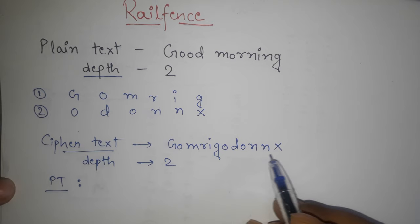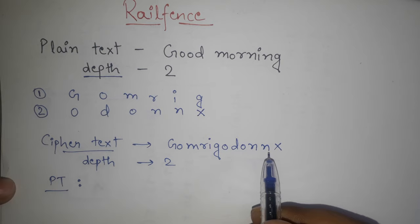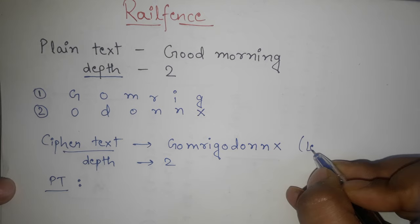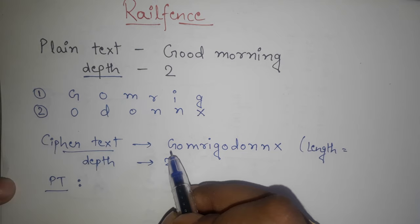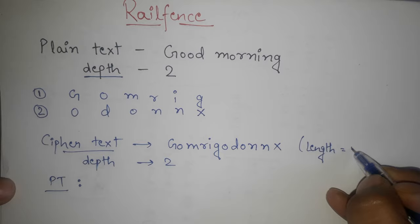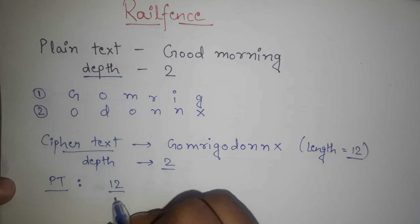For ciphertext, the depth I want to divide. We divide the length by the depth. How much length is? It means total of the characters. 1, 2, 3, 4, 5, 6, 7, 8, 9, 10, 11, 12. Length is 12. If I divide the length, this is 12 divided by 2, which is equal to 6.